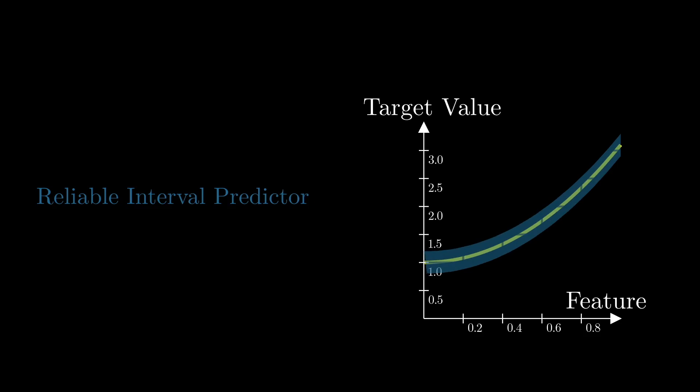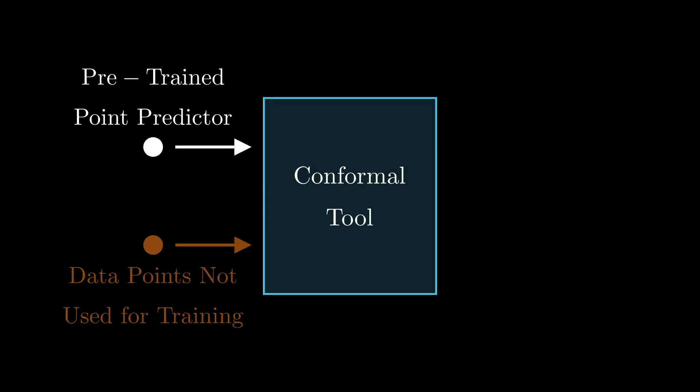Reliable means intervals that have coverage guarantees. For example, when we present a 90 percent prediction interval, the probability of the true unknown label being within the interval should be at least 90 percent if not more. In addition to the pre-trained model, we are also given a set of labeled points that were not used for training. So we want to build a tool that inputs a pre-trained point predictor and set of data points not used for training, and outputs a reliable interval predictor.